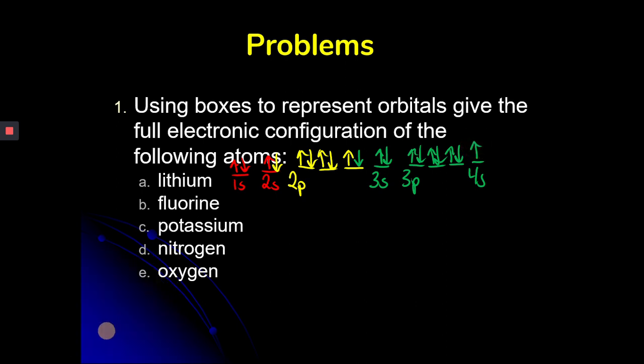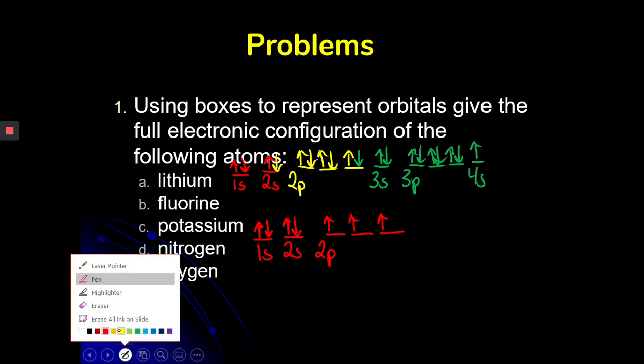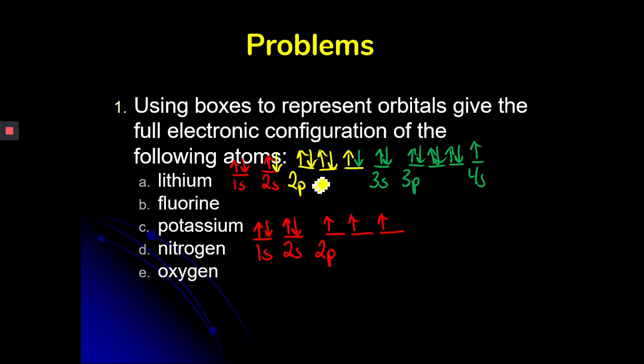For nitrogen, if we wanted to start again, 1S2, 2S2, 2P, 1, 2, 3. Nitrogen has three electrons. They would all go in different orbitals, all the same direction. And so if we were to add on for oxygen, which has one more electron, it could go in any of these orbitals. So it doesn't matter as long as you pair that last eighth electron.